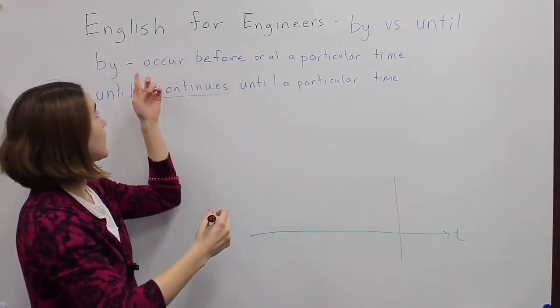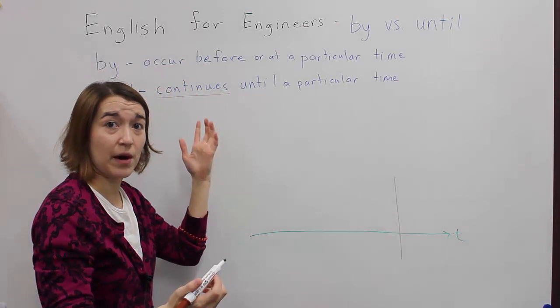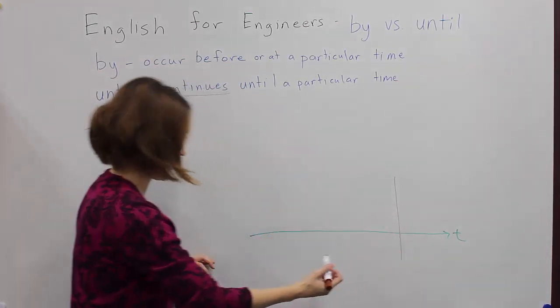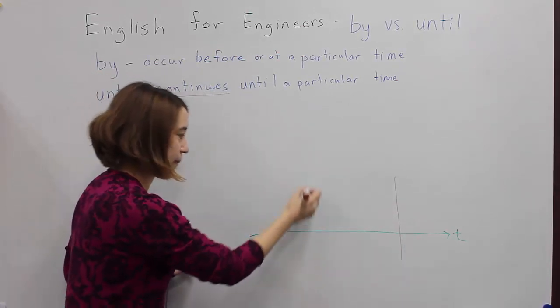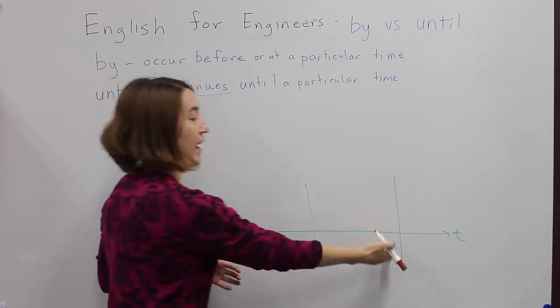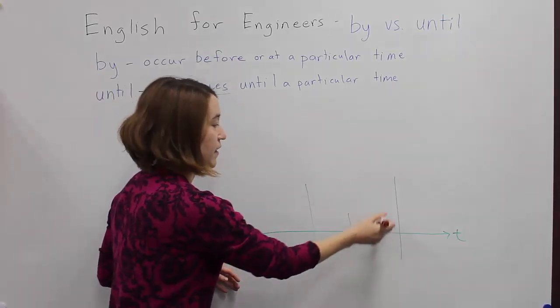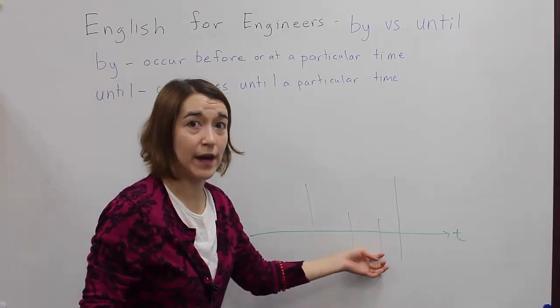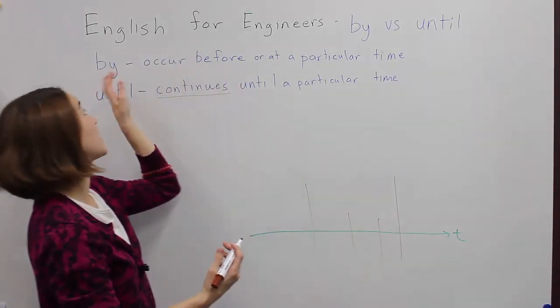And if it's something by, using by, something will occur before or at this time. So we'll say, if it happens here, happens once, it occurs, it's done. It happened by this time. Or if it happens here, or here, it happens once, usually just once, before that time. Okay, so in that case, you would use by.